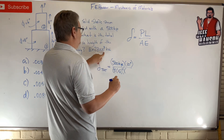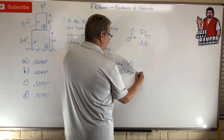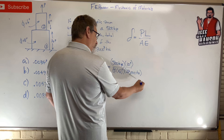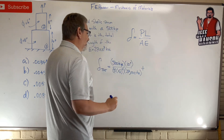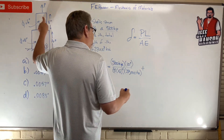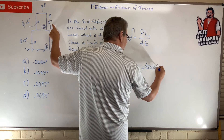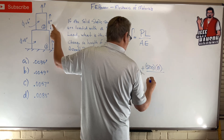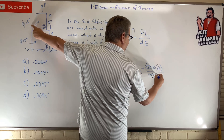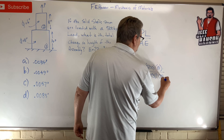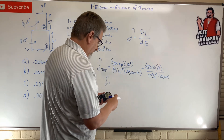Times E which is 29,000 ksi. The units work out — kips cancel with kips per square inch. Plus piece two: same load, 500 kips, times L which is 8 inches, divided by A which is pi times 3 squared, times 29,000. Now we just plug into the calculator.